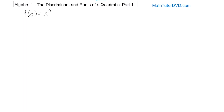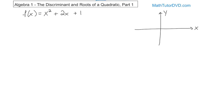The next one we're going to look at is f of x equals x squared plus 2x plus 1. I'm going to sketch this one before we get started. It's not going to be a perfect sketch, but if you were to graph it on graph paper it would basically look something like this. You know it's going to look like a parabola because of the square term. But this one's a little different — it comes down but just touches the axis and then goes back up the other way.